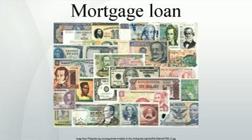A standard or conforming mortgage is a key concept as it often defines whether or not the mortgage can be easily sold or securitized, or, if non-standard, may affect the price at which it may be sold. In the United States, a conforming mortgage is one which meets the established rules and procedures of the two major government-sponsored entities in the housing finance market, including some legal requirements.